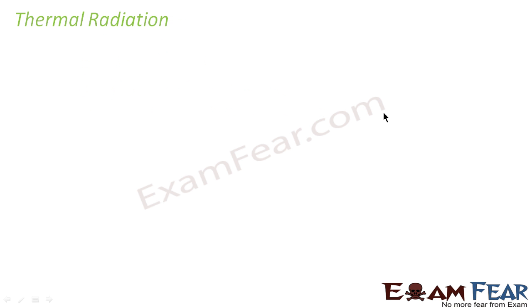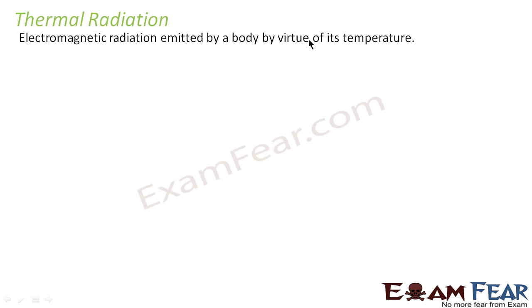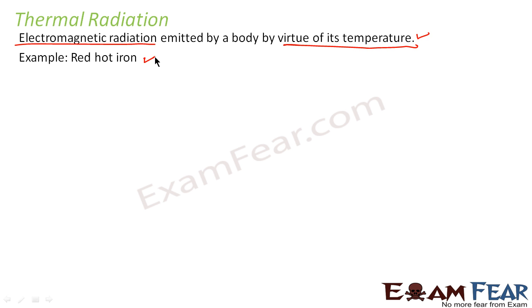Now that we know what radiation is, let me introduce a small modification to the term — that is thermal radiation, meaning radiation by virtue of heat. The term 'thermal' means something related to heat. Electromagnetic radiation emitted by a body by virtue of its temperature is called thermal radiation. For example, a red hot iron has a very high temperature, and because of that temperature it emits radiation. That electromagnetic radiation is known as thermal radiation.